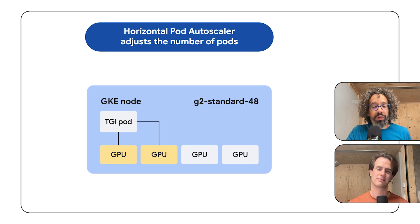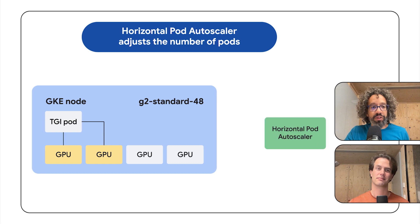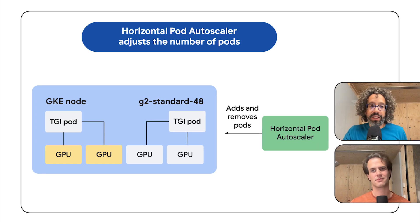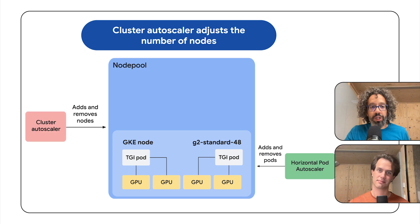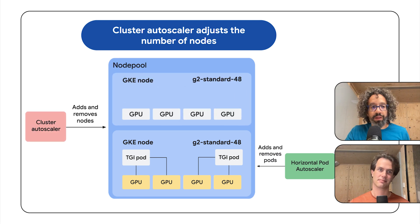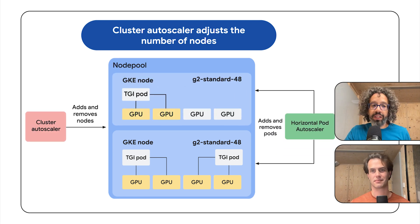I configured the horizontal pod autoscaler that automatically adjusts the number of pods. It will add more pods when the existing containers are at capacity and remove them when they are idle. I also configured node auto-provisioning to automatically add more nodes when the cluster runs out of capacity. So you configured a horizontal pod autoscaler, and GKE automatically adjusts the number of pods — but how does it know when to add or remove pods?